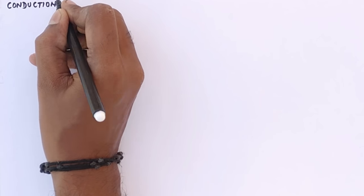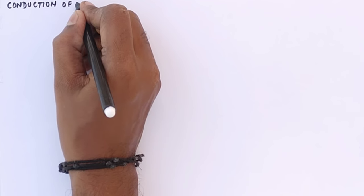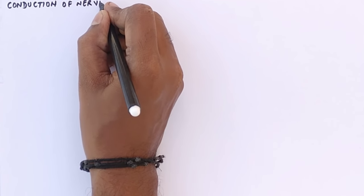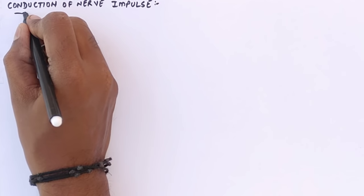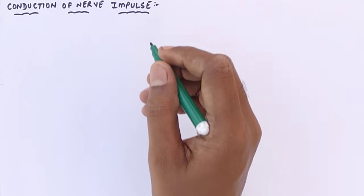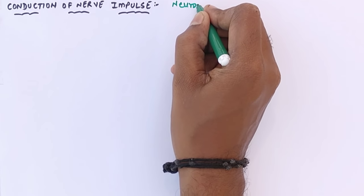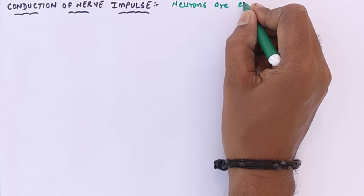In this video I am going to talk about conduction of nerve impulse — how the impulse travels in the axon. In the previous video I talked about synapse, that is how the impulse travels between two different neurons. Now in this video let's focus on the conduction of the nerve impulse. Whenever we talk about nerve impulse we need to understand neurons — they are excitable cells.